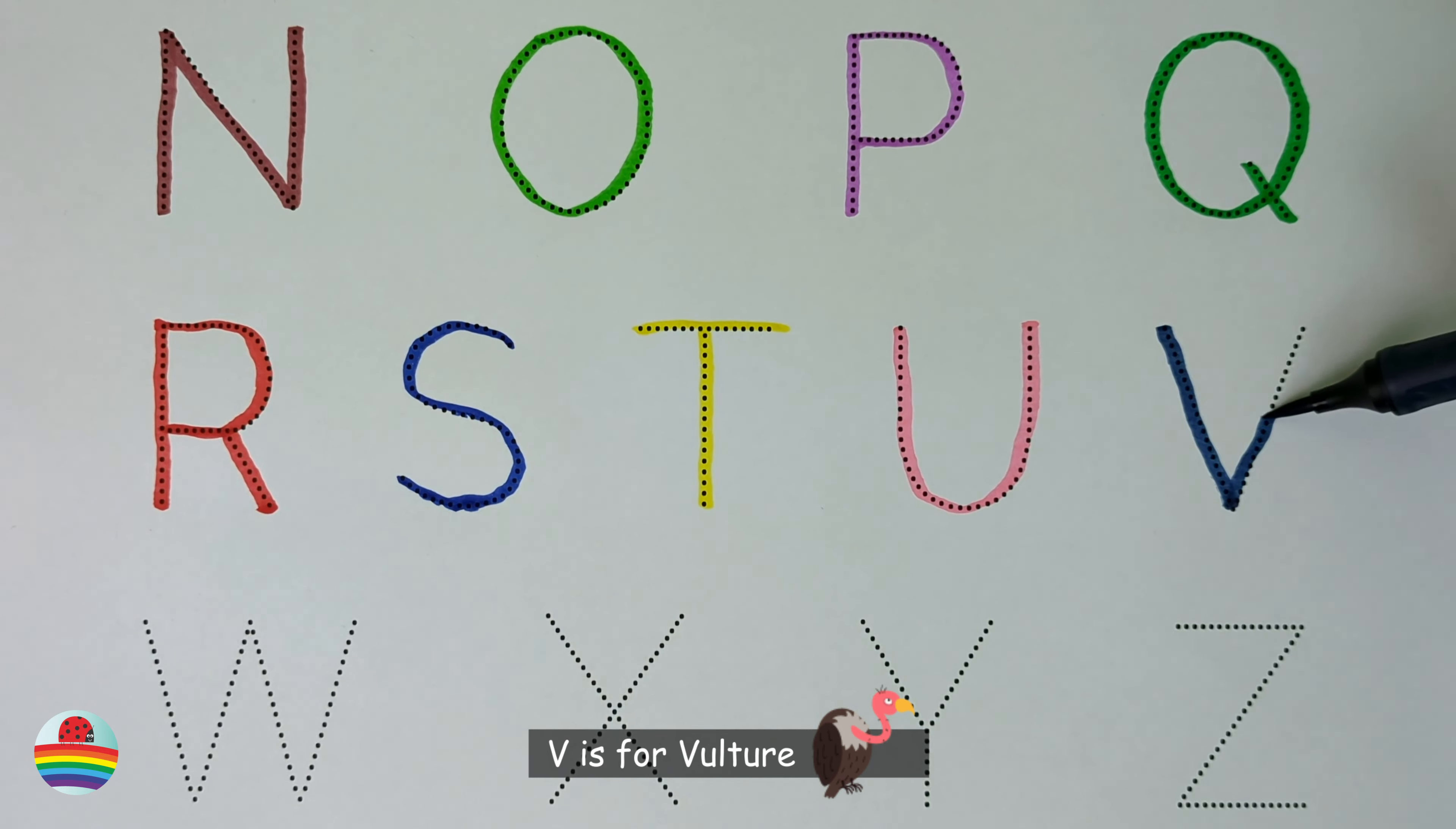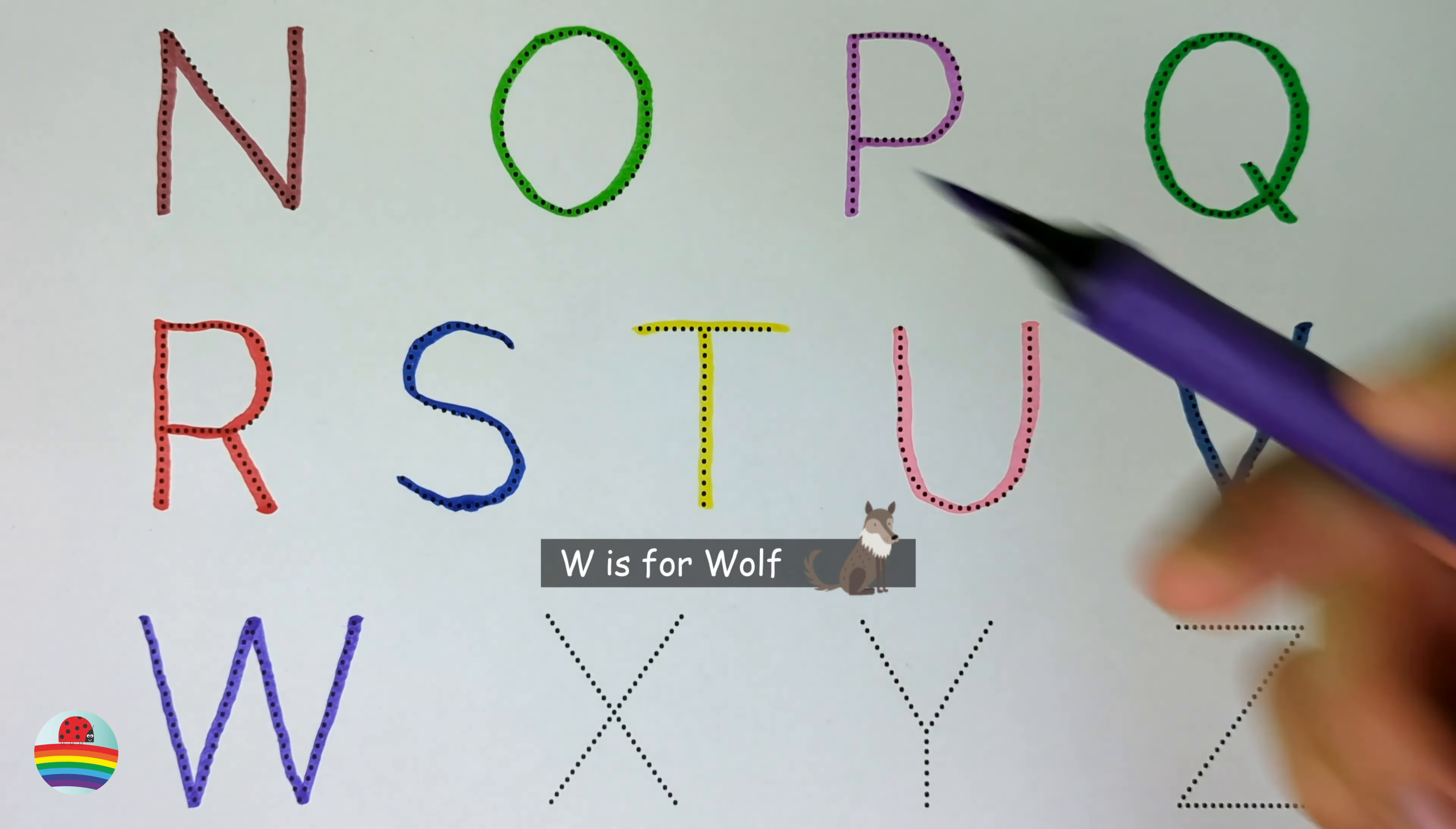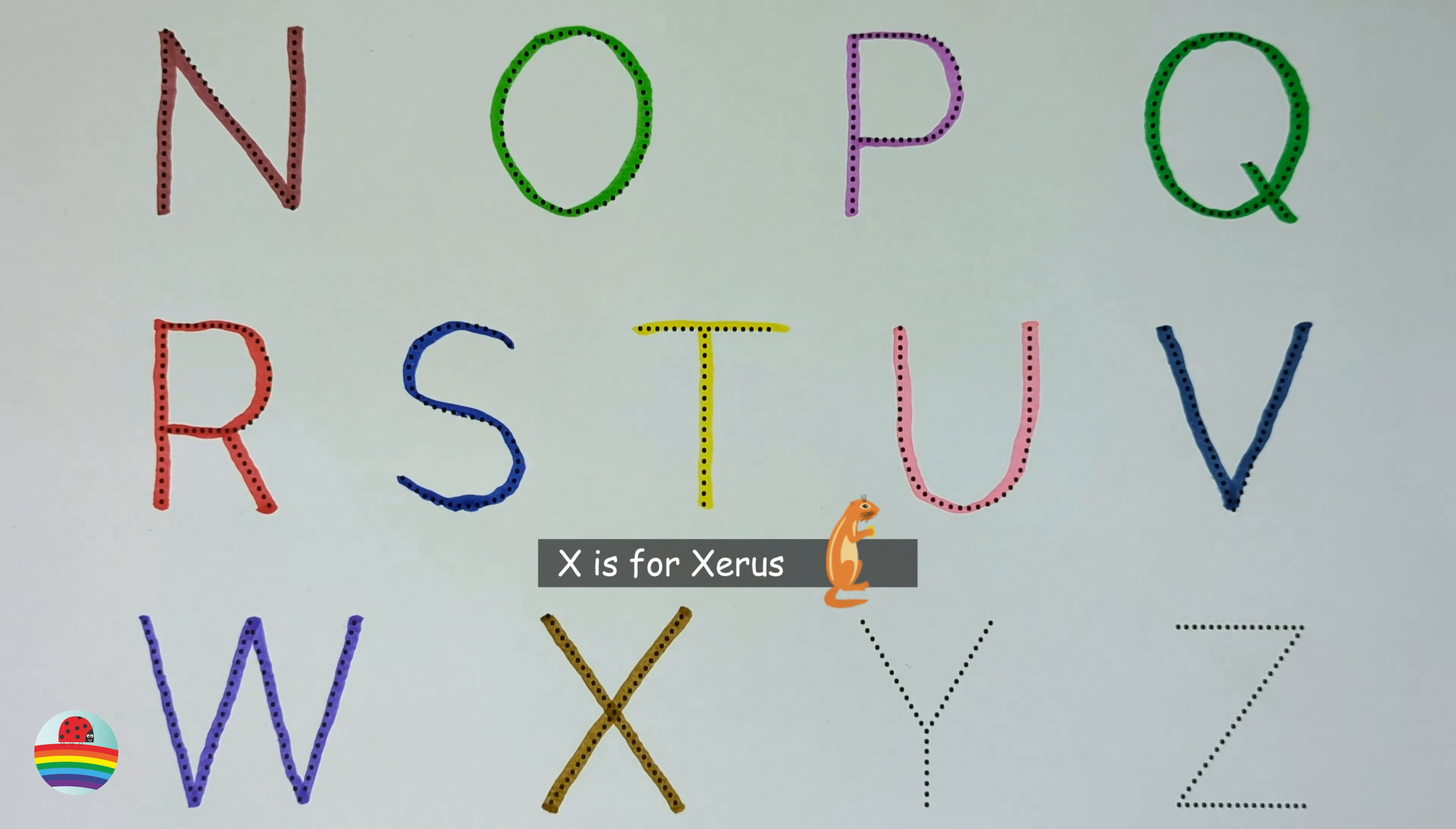V. V. V is for vulture. V. W. W. W is for wolf. W. X. X is for xaris. X.